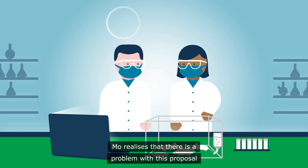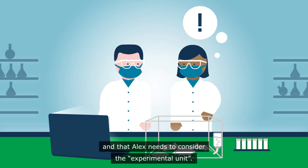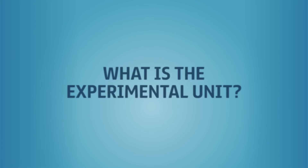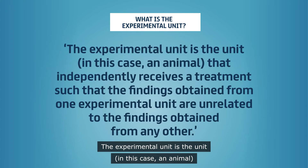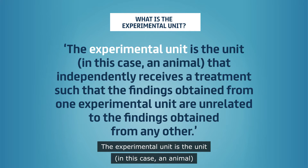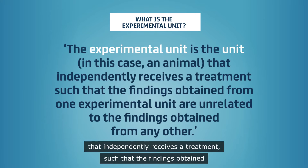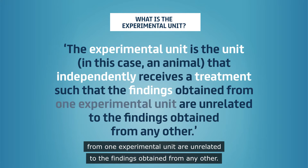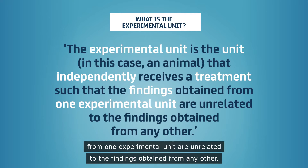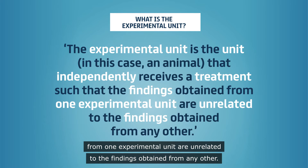Mo realises that there is a problem with this proposal and that Alex needs to consider the experimental unit. The experimental unit is the unit — in this case an animal — that independently receives a treatment, such that the findings obtained from one experimental unit are unrelated to the findings obtained from any other.